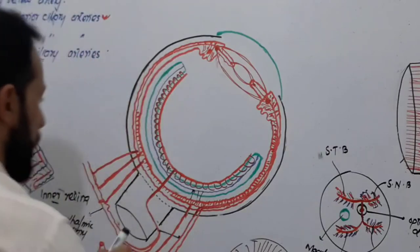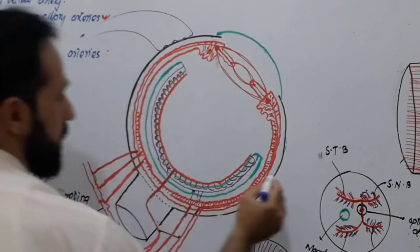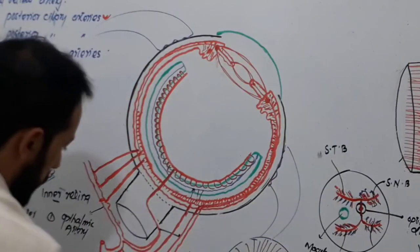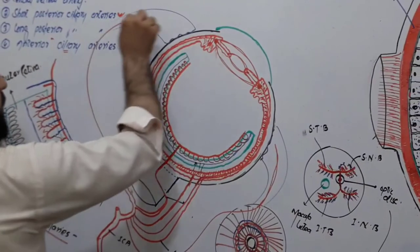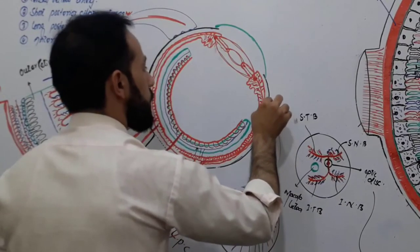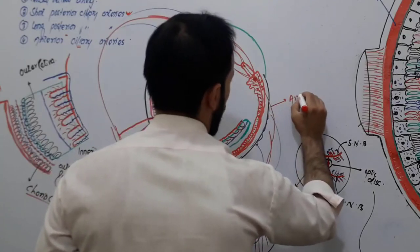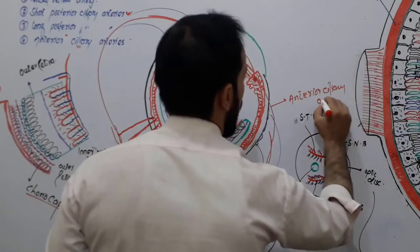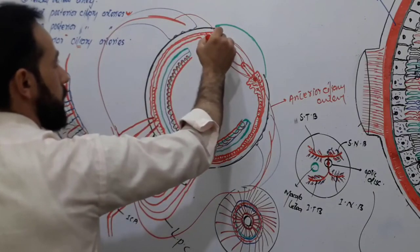Now I want to mention another important point. There are recti muscles around the eye, and from the ophthalmic artery the muscular branches enter these muscles. From those muscular branches, a branch of artery separates and enters the ciliary body — this is called the anterior ciliary artery. There are four recti muscles: lateral rectus, medial rectus, inferior rectus, and superior rectus.